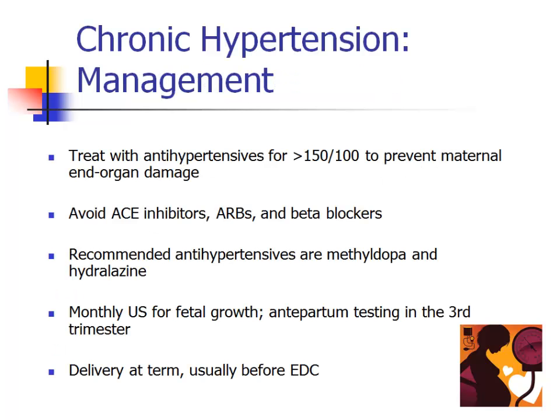Management of chronic hypertension in pregnancy is outlined here. Antihypertensive medication is prescribed only for women with blood pressures greater than about 150 over 100, to protect the fetus from unnecessary medication exposure. Because hypertension can affect the growth of the fetus, regularly scheduled ultrasounds are performed and antenatal testing is ordered in the third trimester. These patients are at increased risk for developing pre-eclampsia and should be followed closely in the second half of pregnancy.